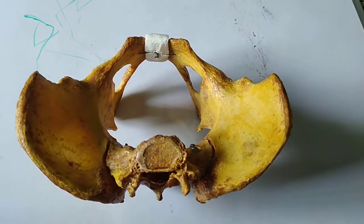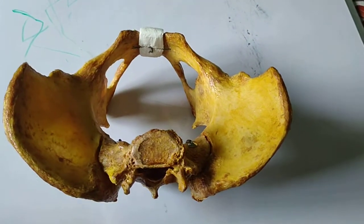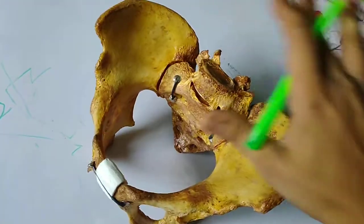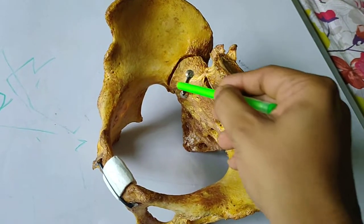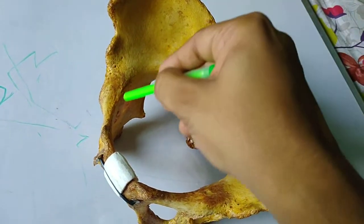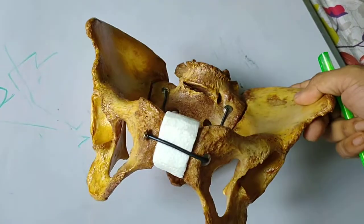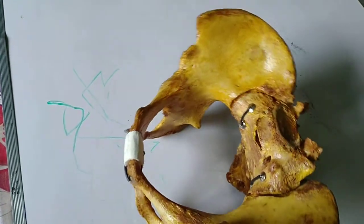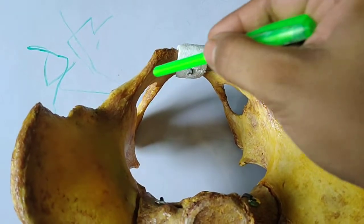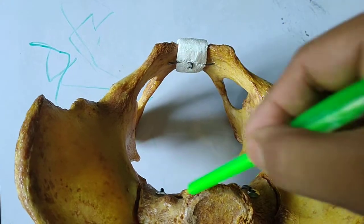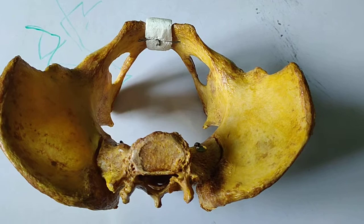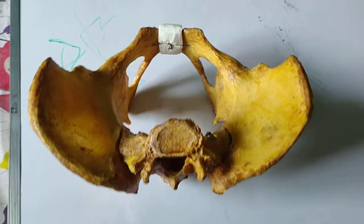Today I am going to show you the boundaries of the pelvic inlet. This is a female bony pelvis. The bony pelvis has two parts: the false pelvis, which is the upper part, and from this area downward is the true pelvis. The true pelvis has three planes: the inlet, the mid-cavity, and the outlet. This hollow, almost round-shaped structure is the pelvic inlet. In a gynecoid pelvis, the pelvic inlet looks like an inverted heart shape.